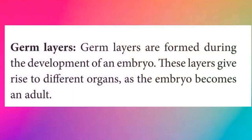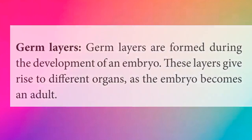Germ layers are formed during the development of an embryo. These layers give rise to different organs as the embryo becomes an adult. Germ layers form when the embryo develops after fertilization. As the embryo develops into an adult, different organs are formed from these germ layers.